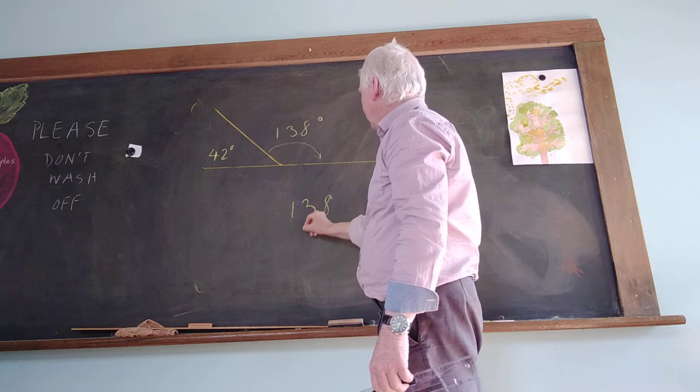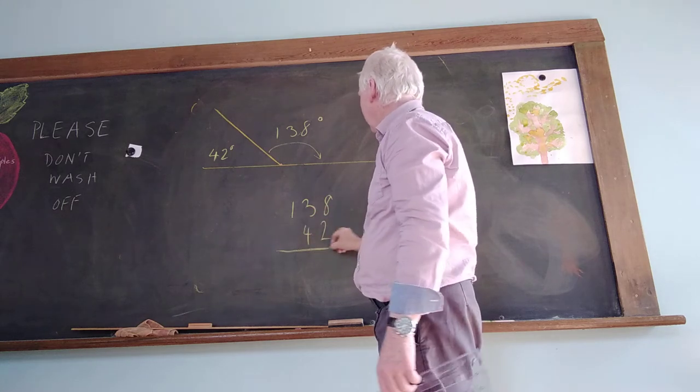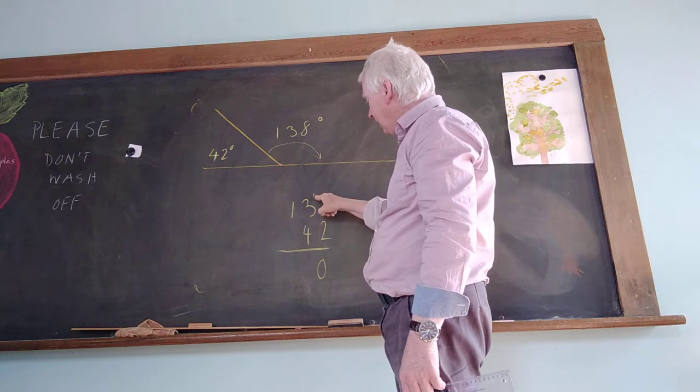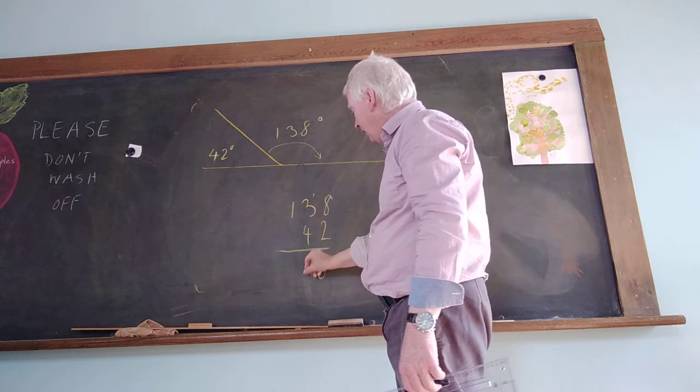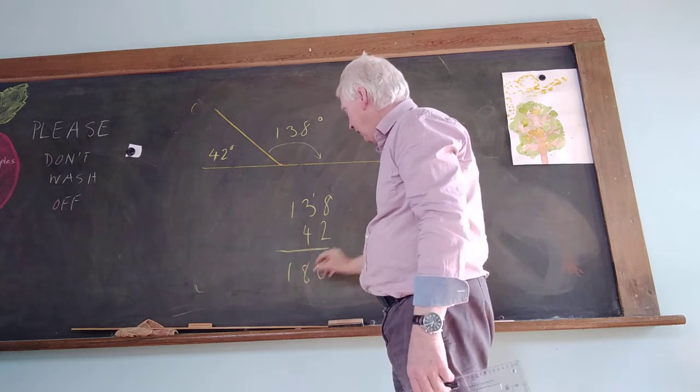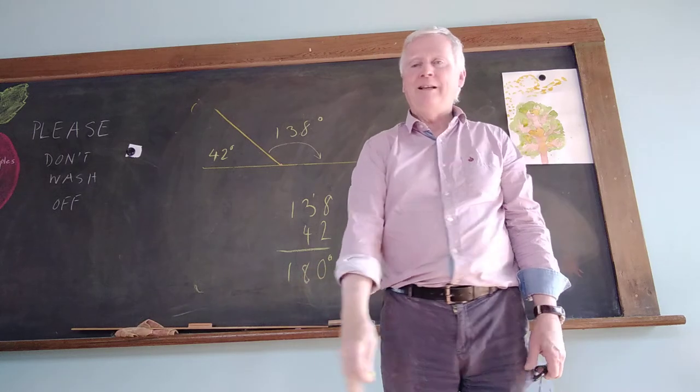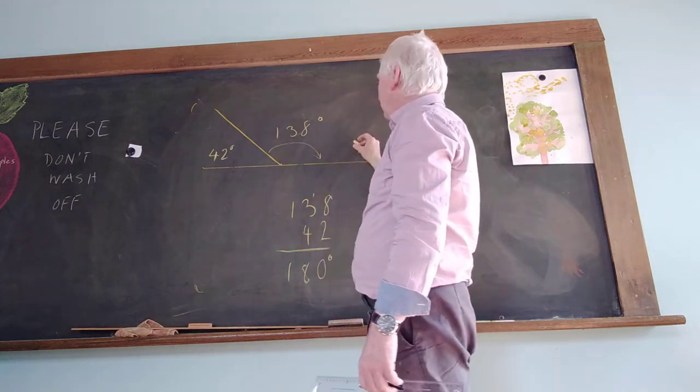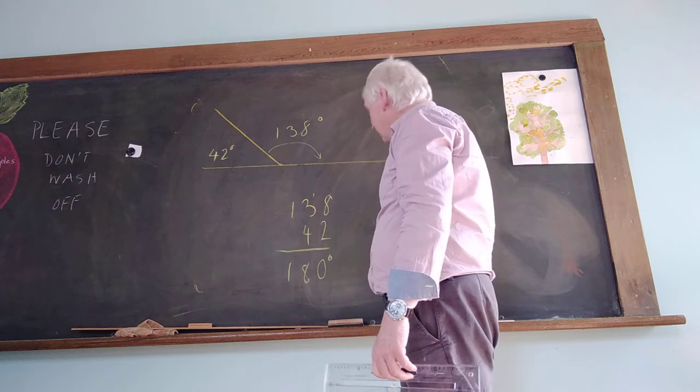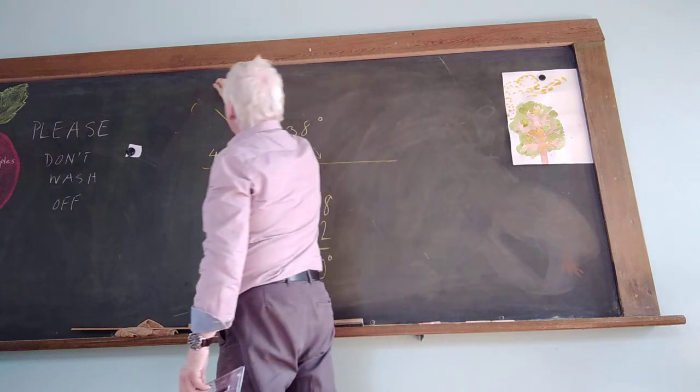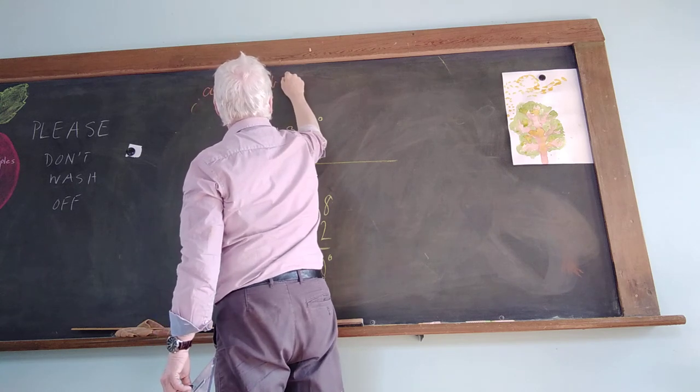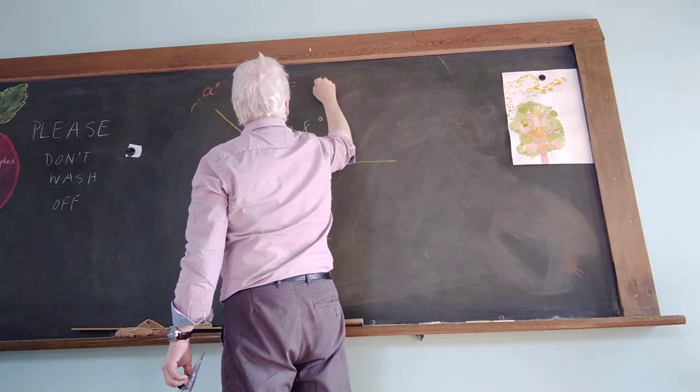42 plus 138 adds up to 180 degrees. Let me show you. So 138 plus 42. 8 and 2 is 10. Carry the one. 1 and 3 is 4. Plus 4 is 8. And that comes out 180 degrees. There you go. So this plus this must equal 180 degrees. And if you write it as a letter, so this is A plus B degrees equals 180.